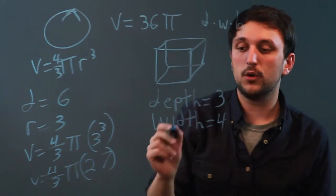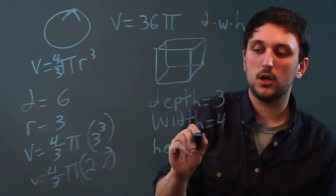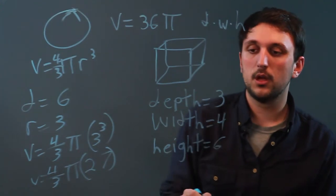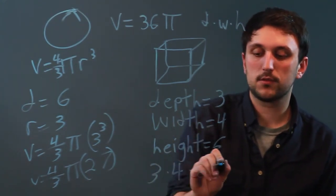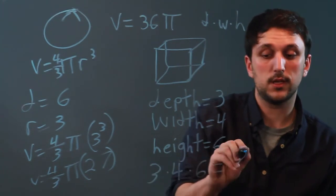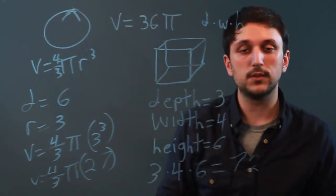So let's make our height 6. So here we would say 3 times 4 times 6, which is 12 times 6 is 72. So the volume would be 72.